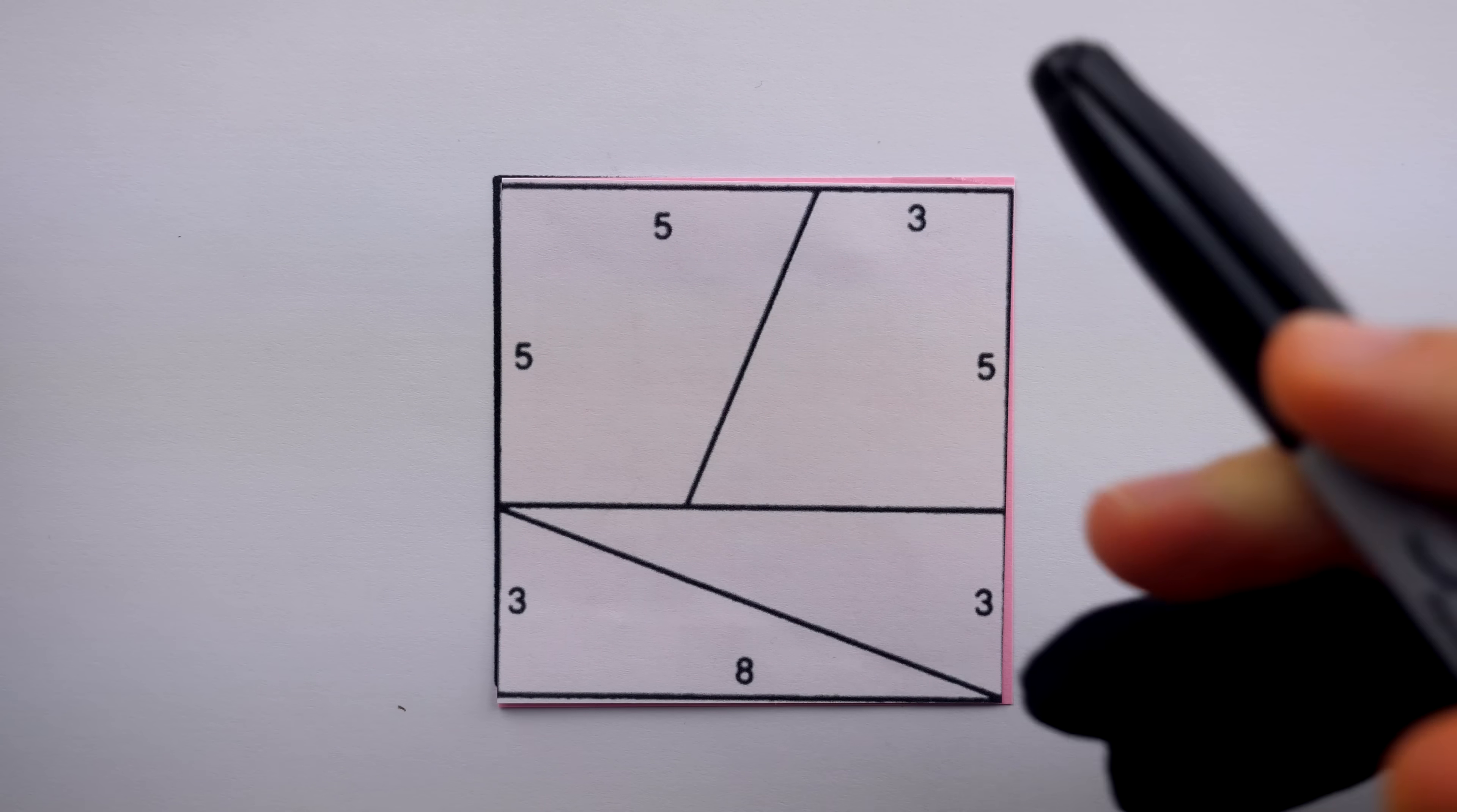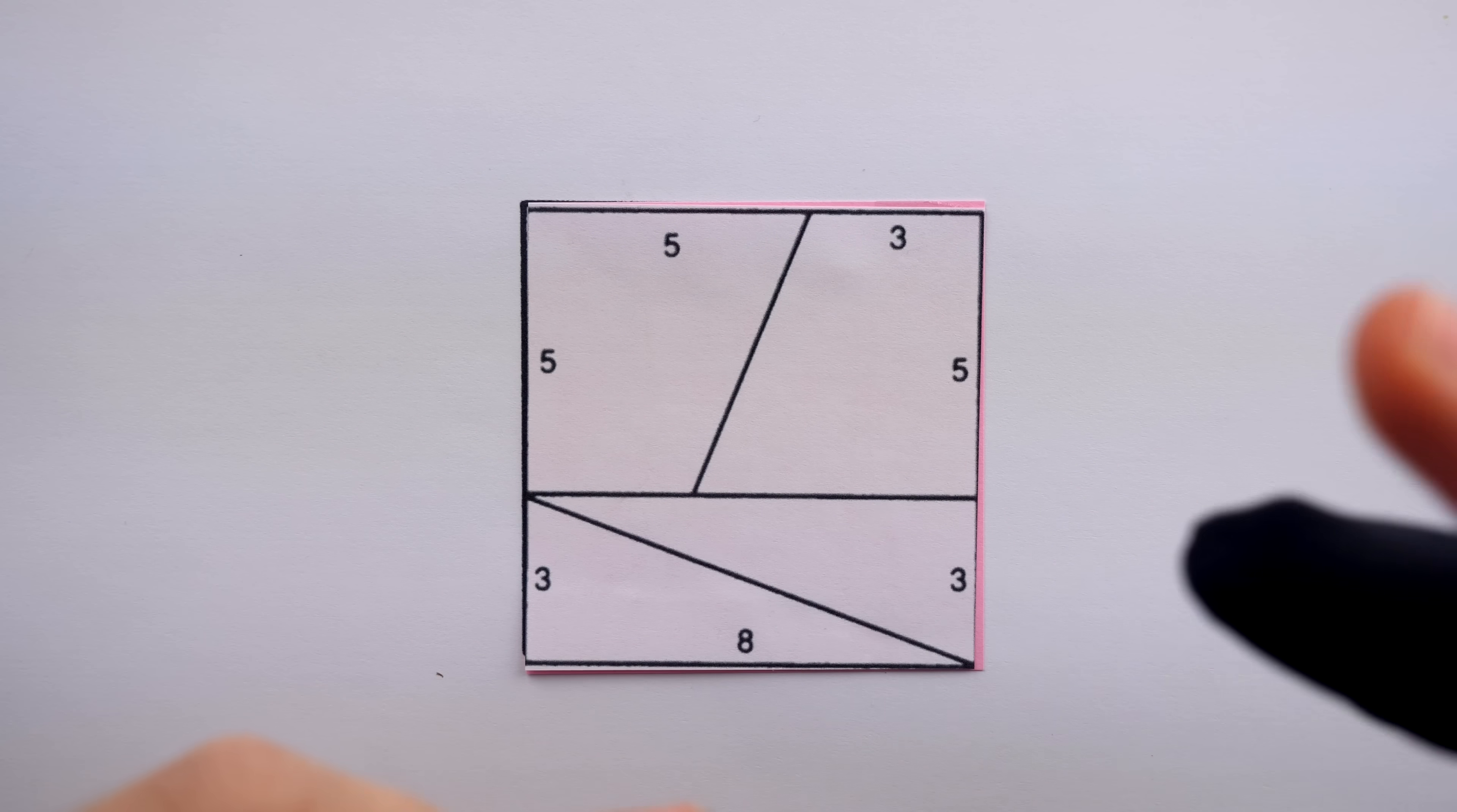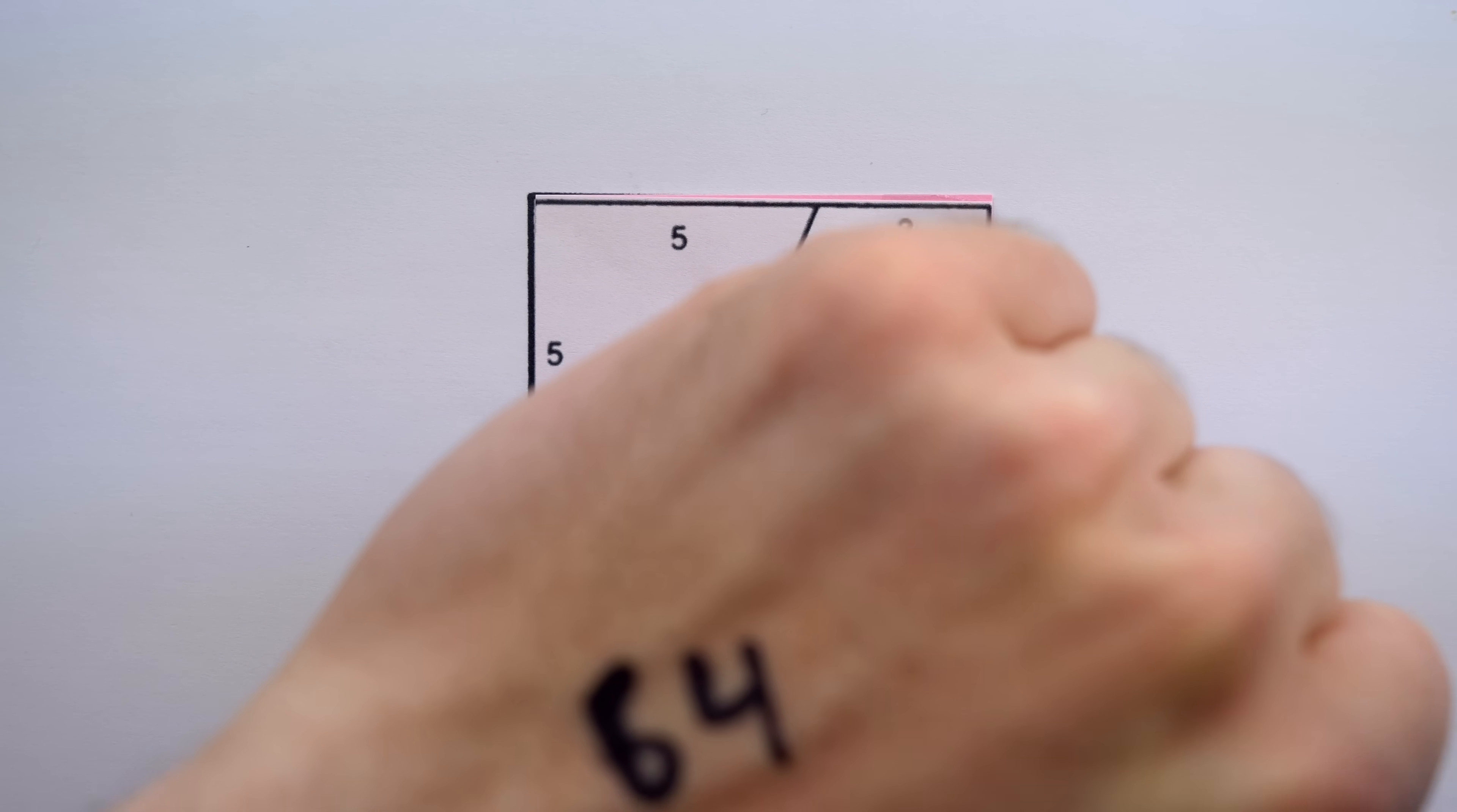Here is a square, and surely you know how to find its area. Just square the side length. We see that this square is an 8 by 8 square, so to find its area, we just multiply 8 by 8, which gives us an area of 64 square units.